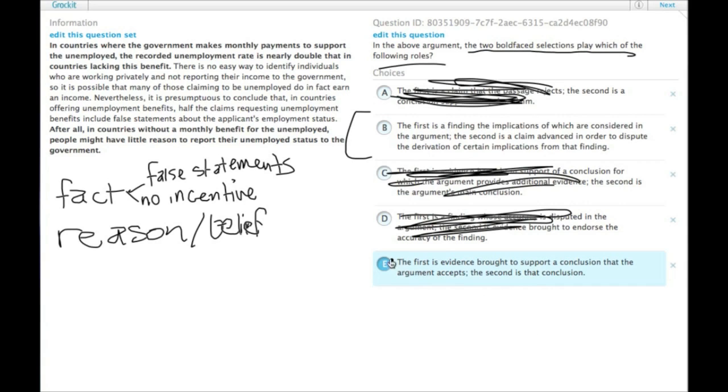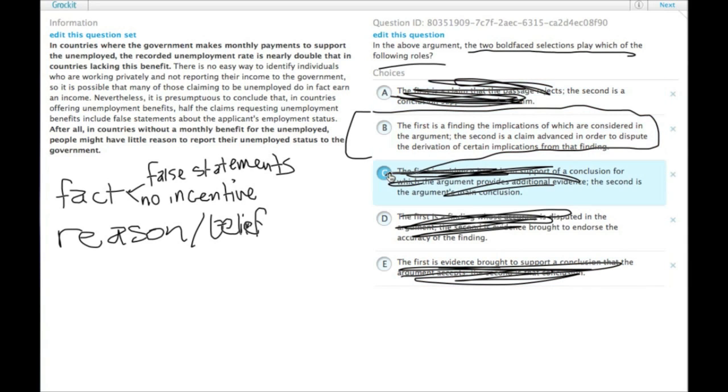So this is true, but the first is evidence that also gets used to support an argument that the, or it's also used to support a conclusion that the argument rejects. So choice E isn't a good summary of what it was. That brings us back to B, which basically says the first bold statement is something that the rest of the passage looks into. And the second bold statement is the explanation that opposes the one that's not in boldface. So choice B is the answer.